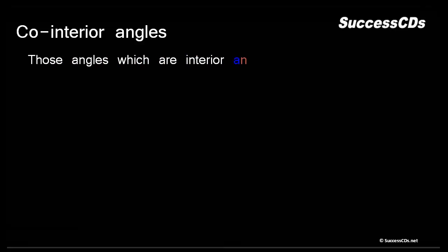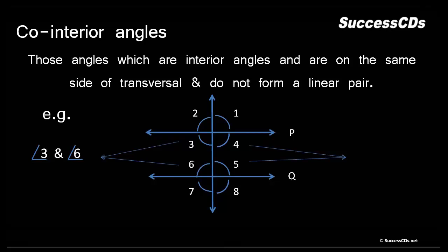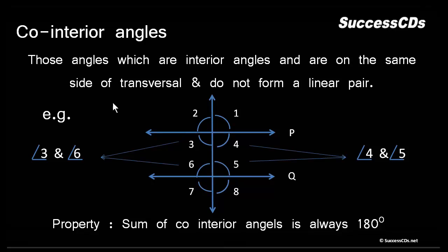Next we move on to co-interior angles — angles which are interior angles on the same side of the transversal and do not form a linear pair. 'Co' means on the same side. Angles 3 and 6 are interior and on the same side (left) of the transversal. Angles 4 and 5 are interior and on the same side as well. So angles 3 and 6 form one pair of co-interior angles, and angles 4 and 5 form another. Their sum is always 180 degrees: angle 3 + angle 6 = 180°, and angle 4 + angle 5 = 180°.